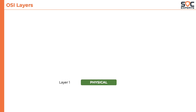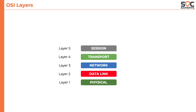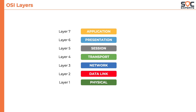Layer 1 is the physical layer. Layer 2 is the data link layer. Layer 3 is the network layer. Layer 4 is the transport layer. Layer 5 is the session layer. Layer 6 is the presentation layer. And layer 7 is the application layer.